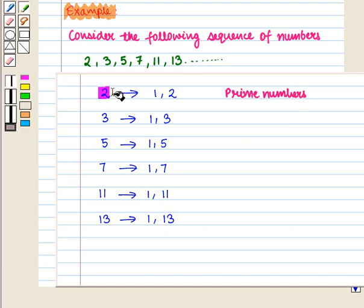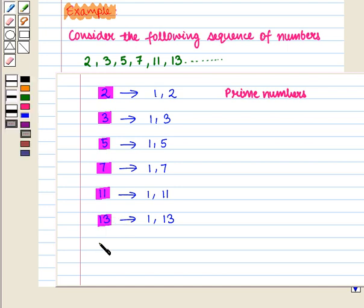Starting from 2, next prime number is 3, then 5, then 7, then 11, then 13 and next prime number after 13 is 17.